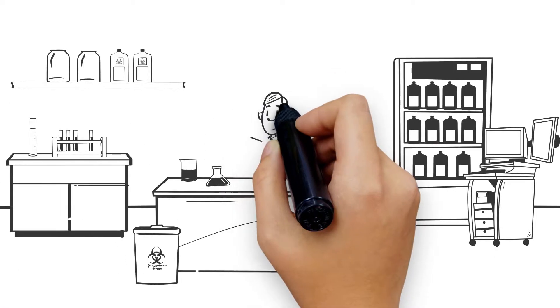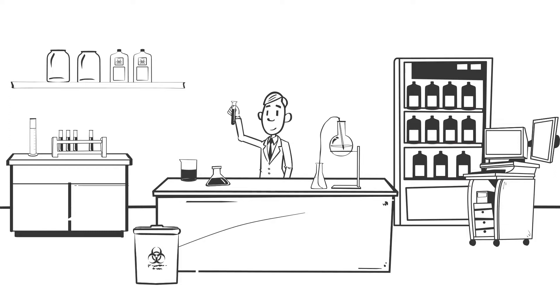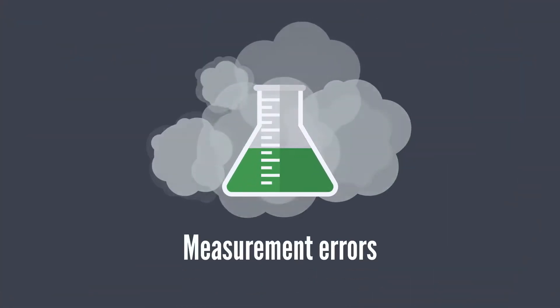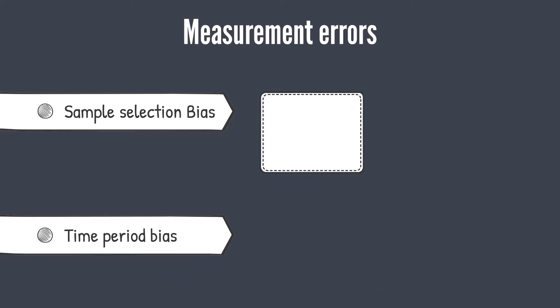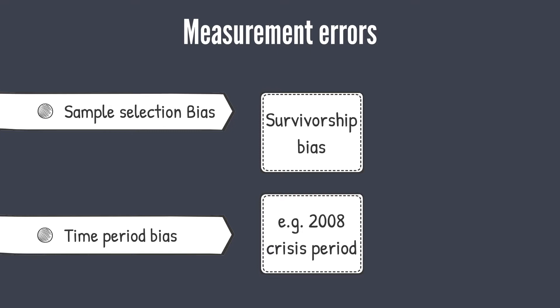The fifth step in hypothesis testing is collecting the data and calculating the test statistic. The quality of our conclusions depends not only on the appropriateness of the statistical model but also on the quality of the data we use in conducting the test. We first need to check for measurement errors in the recorded data. Some issues to be aware of include sample selection bias and time period bias. Sample selection bias refers to bias introduced by systematically excluding some members of the population according to a particular attribute. One type of sample selection bias is survivorship bias — for example, if we define our sample as US bond mutual funds currently operating and collect returns for just these funds, we will systematically exclude funds that have not survived to the present date. Non-surviving funds are likely to have underperformed surviving funds, so the performance reflected in the sample may be biased upward. Time period bias refers to the possibility that when we use a time series sample, our statistical conclusions may be sensitive to the starting or ending date of the sample.